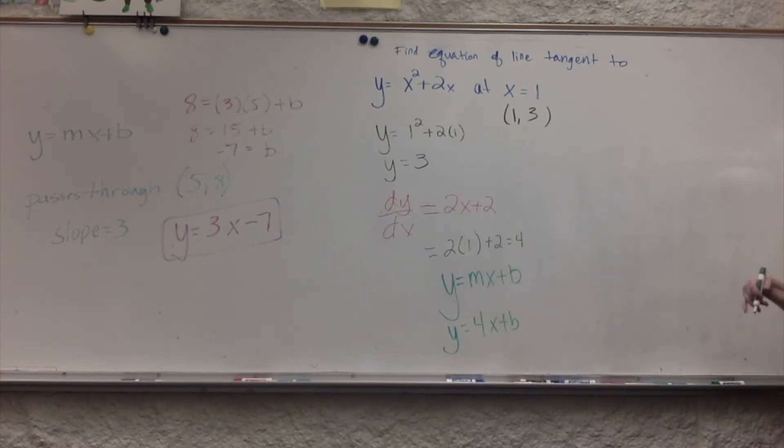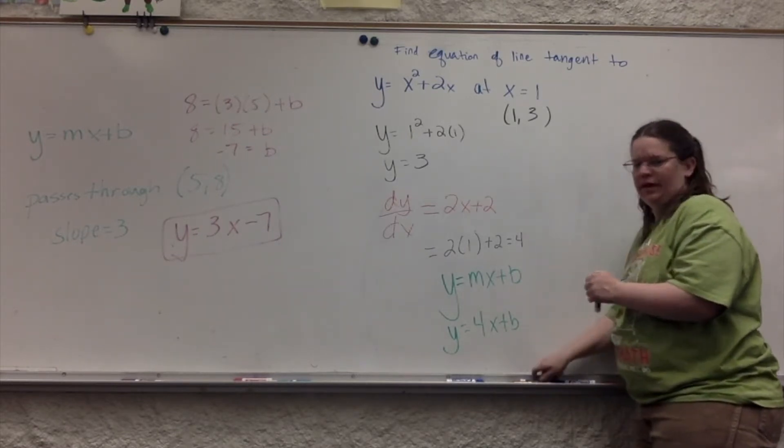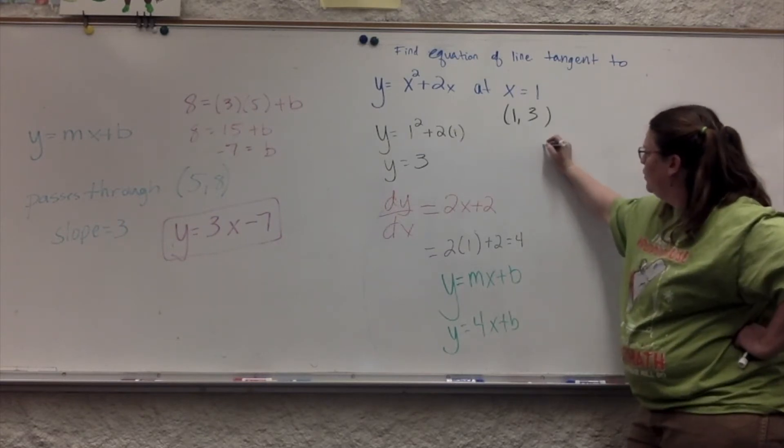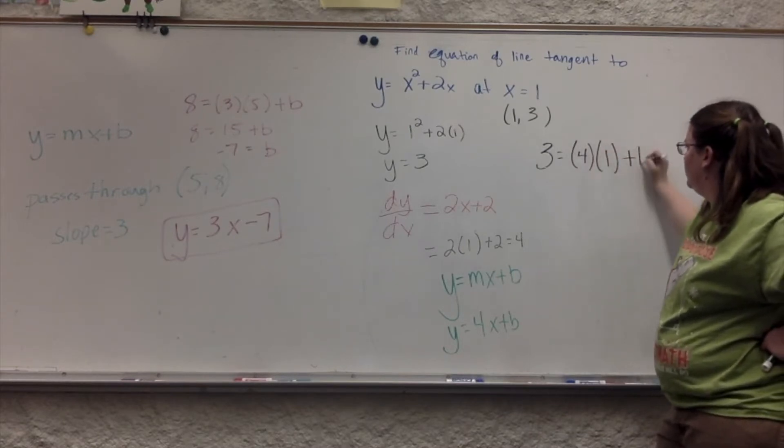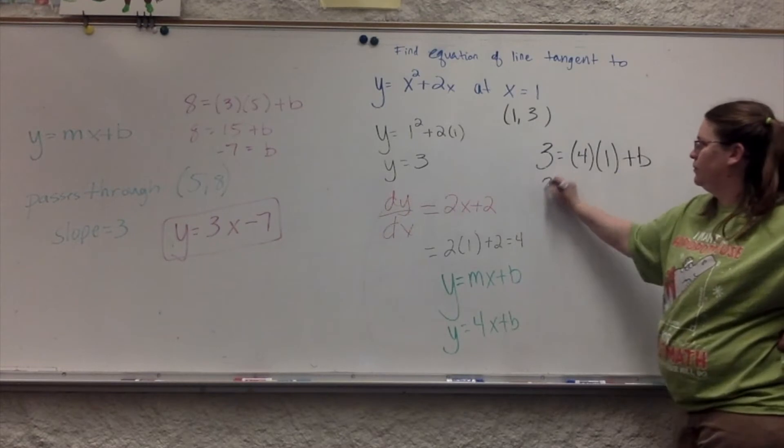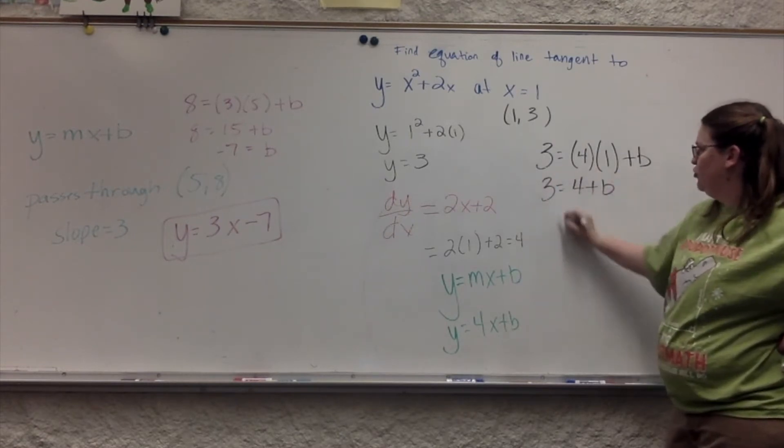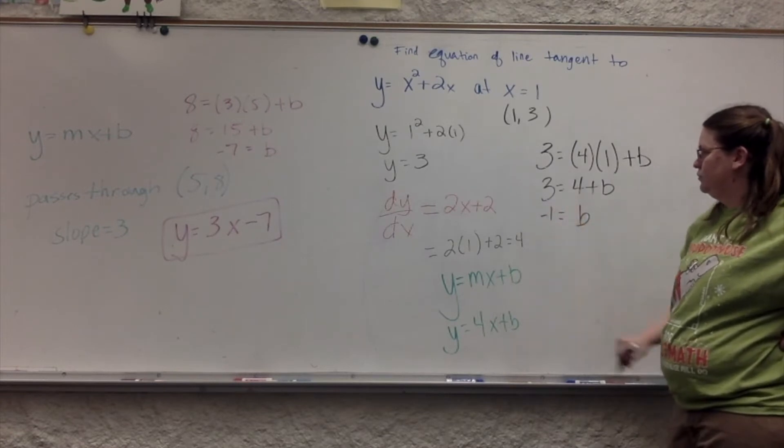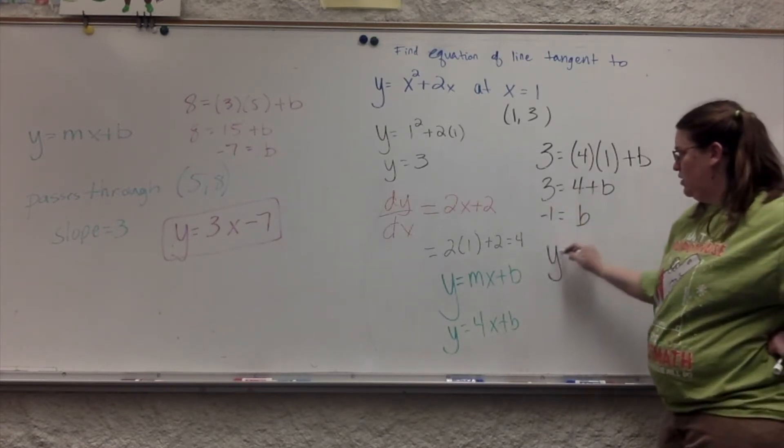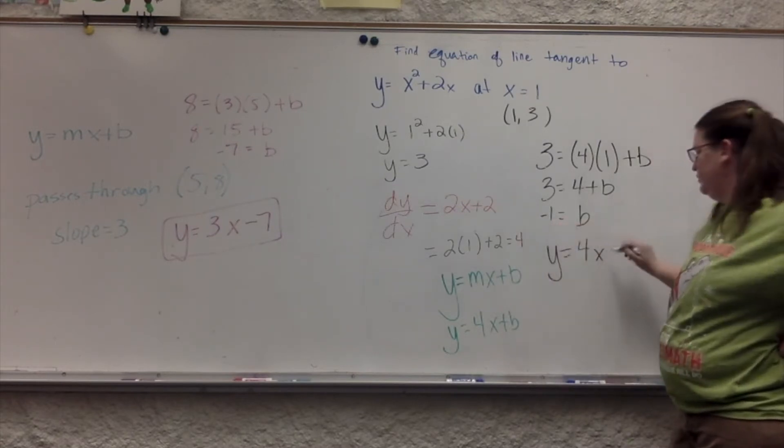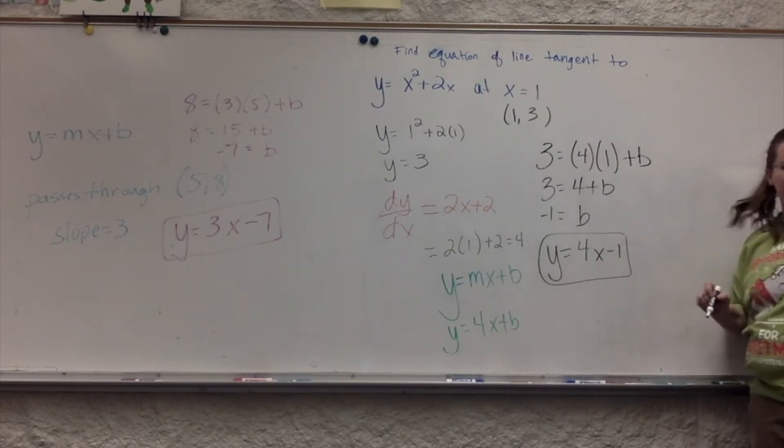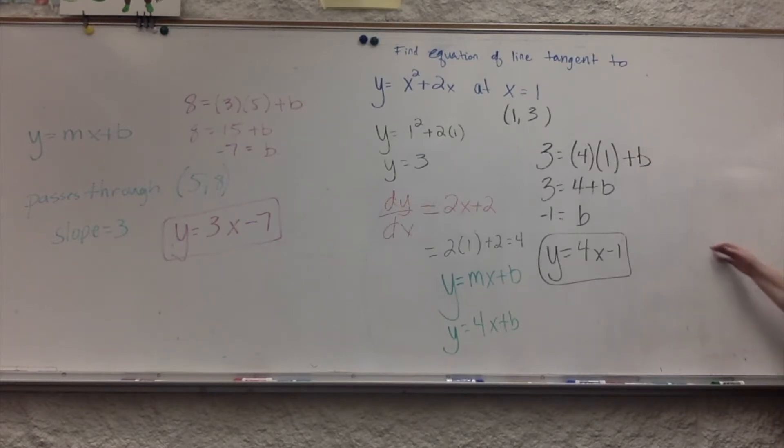One and three. So, then we have 3 equals 4 times 1 plus b. Negative 1 equals b. So, your answer is y equals 4x minus 1. Wait, so, is there two answers? No, there's one answer. We did a whole bunch of work to get that one answer.